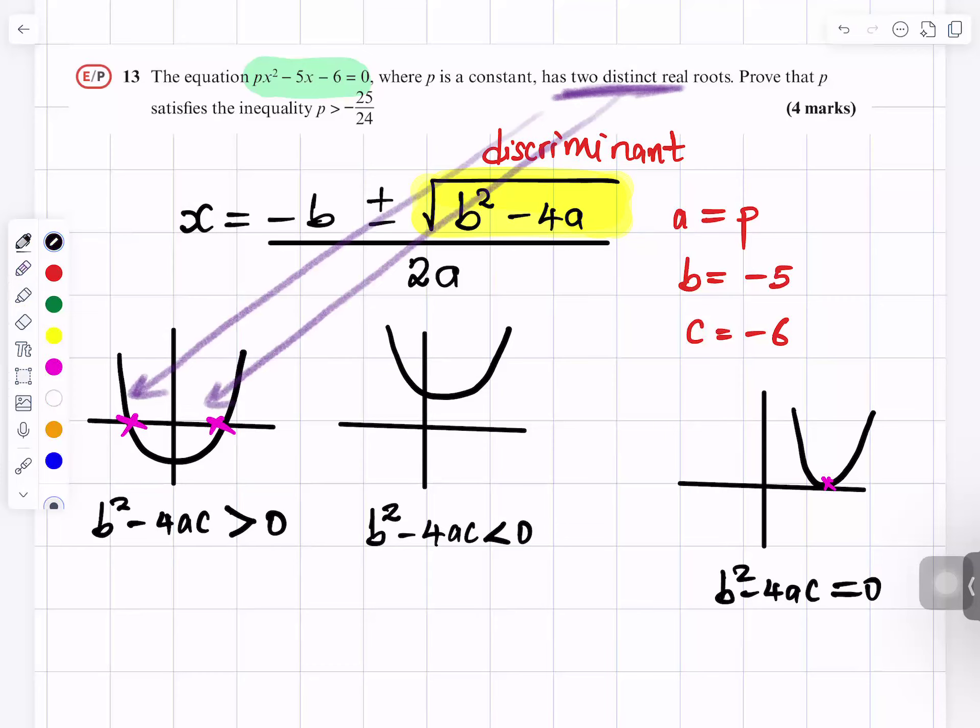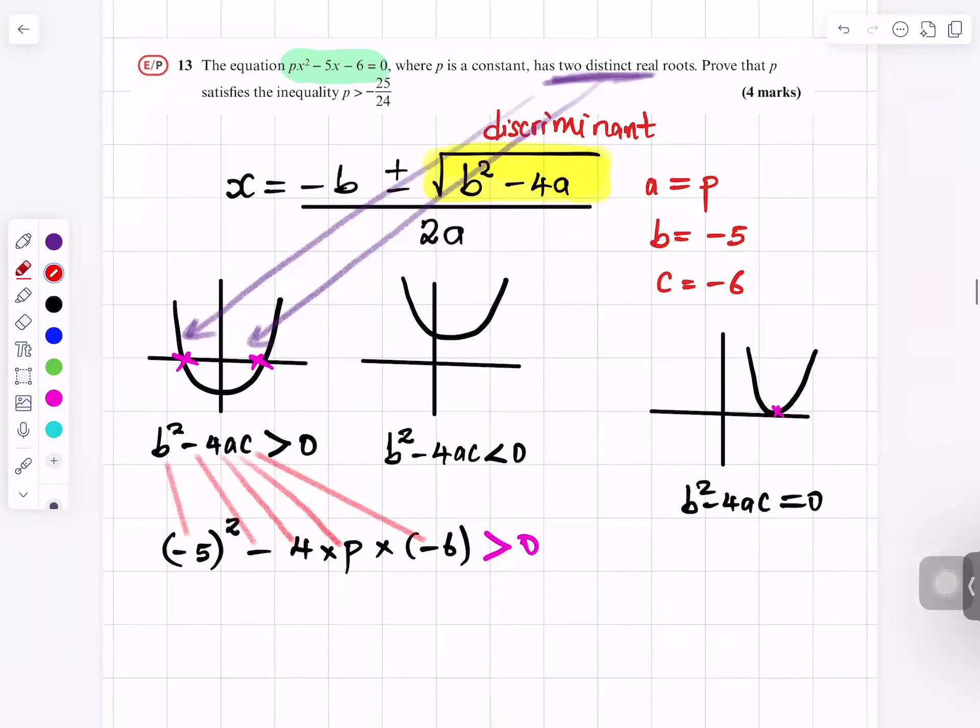B squared minus 4AC is greater than zero. So we know B is minus 5, so minus 5 squared minus 4 times A is P times C is minus 6. It has to be greater than zero. So all I am doing here is putting B squared minus 4 times A times C is greater than zero. Simplifying that, minus 5 squared is 25. And then minus 4 times minus 6 is plus 24P is greater than zero.